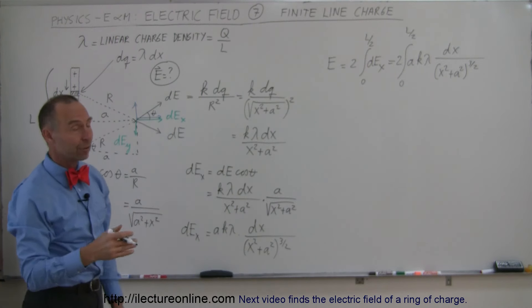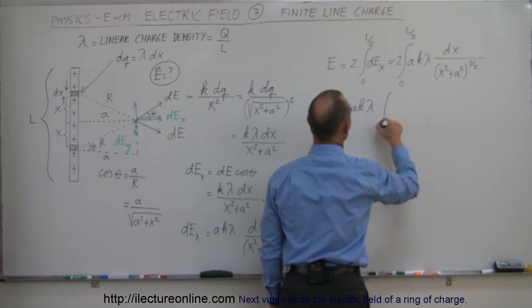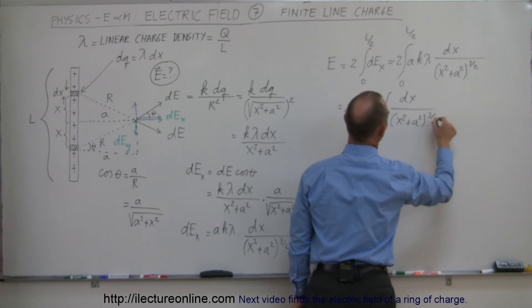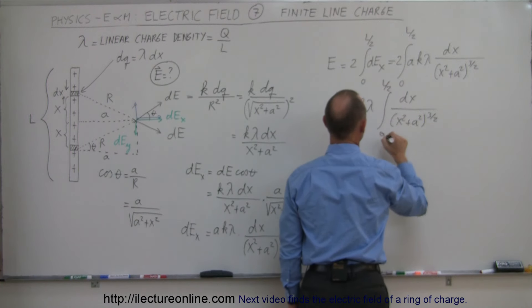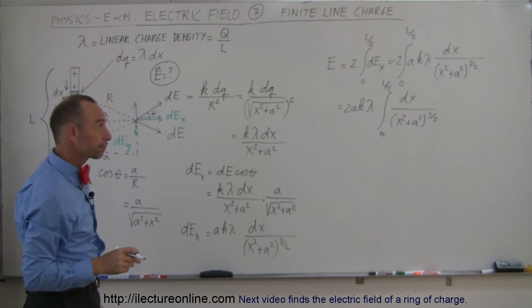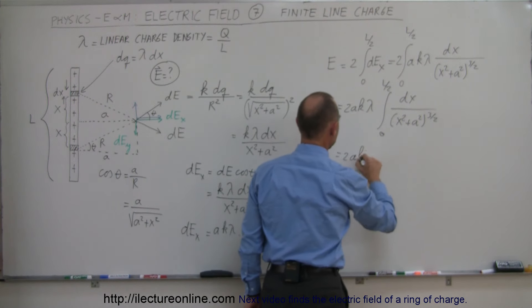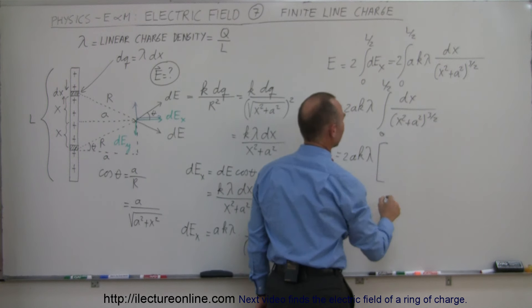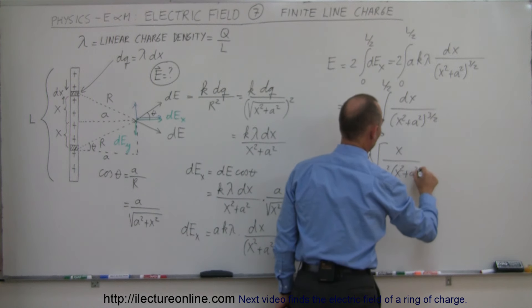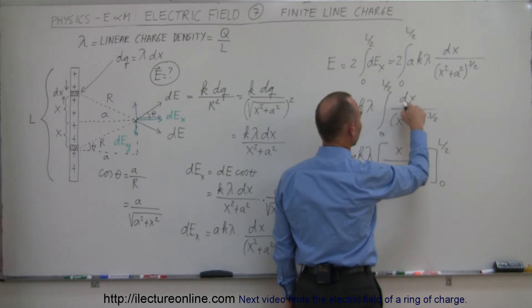That integral is a well-known standard form. Its result gives 2AKλ times x divided by [A² times (x² + A²)^(1/2)], evaluated from 0 to L/2. Plugging in the upper limit x = L/2 gives the expression with L/2, and plugging in the lower limit x = 0 gives zero for the whole fraction.